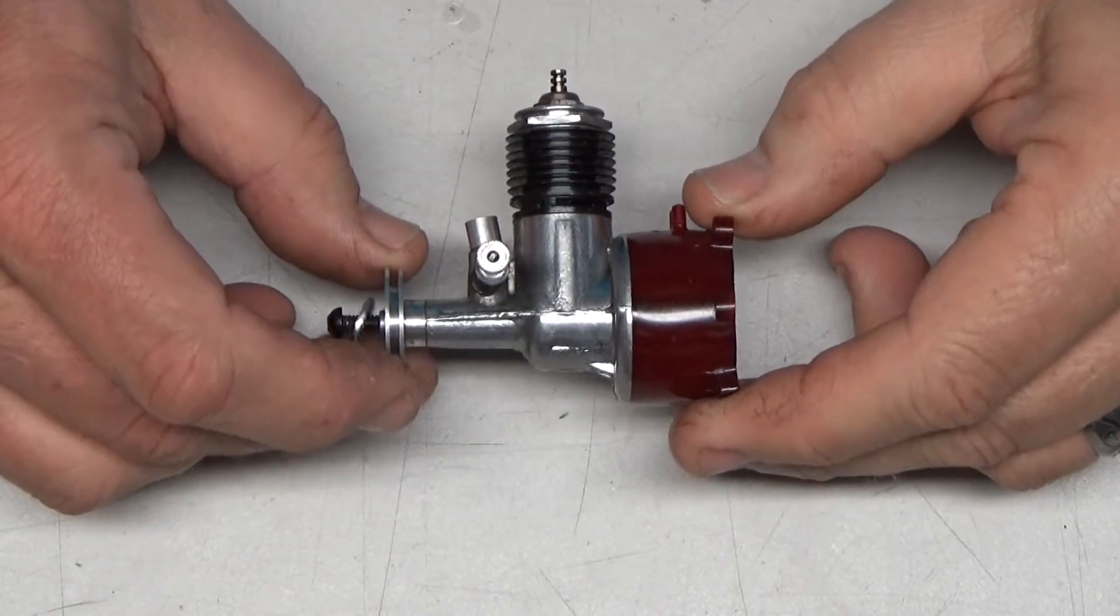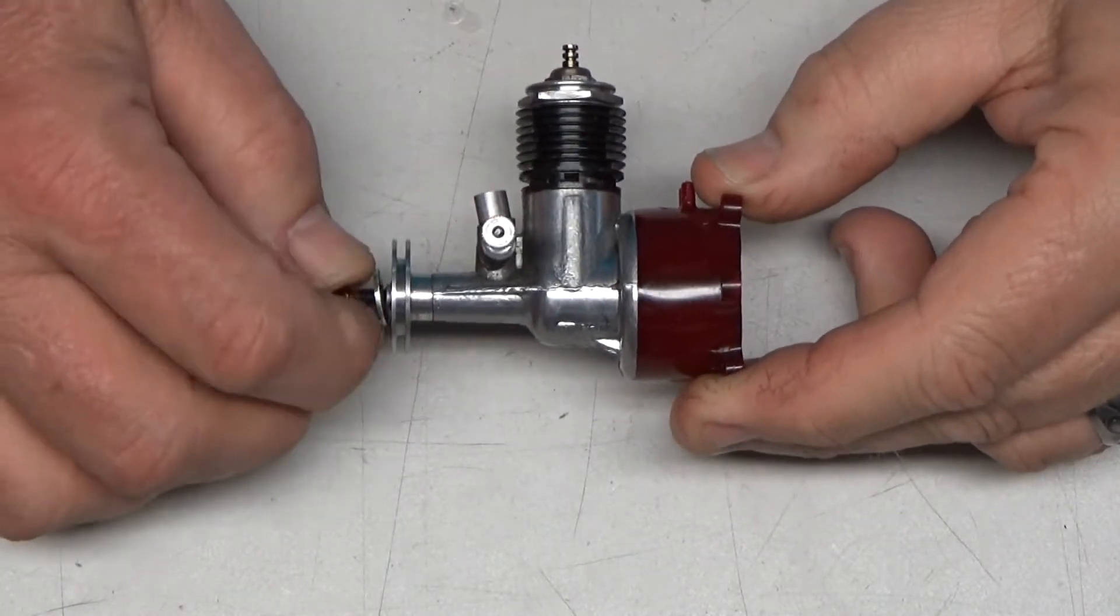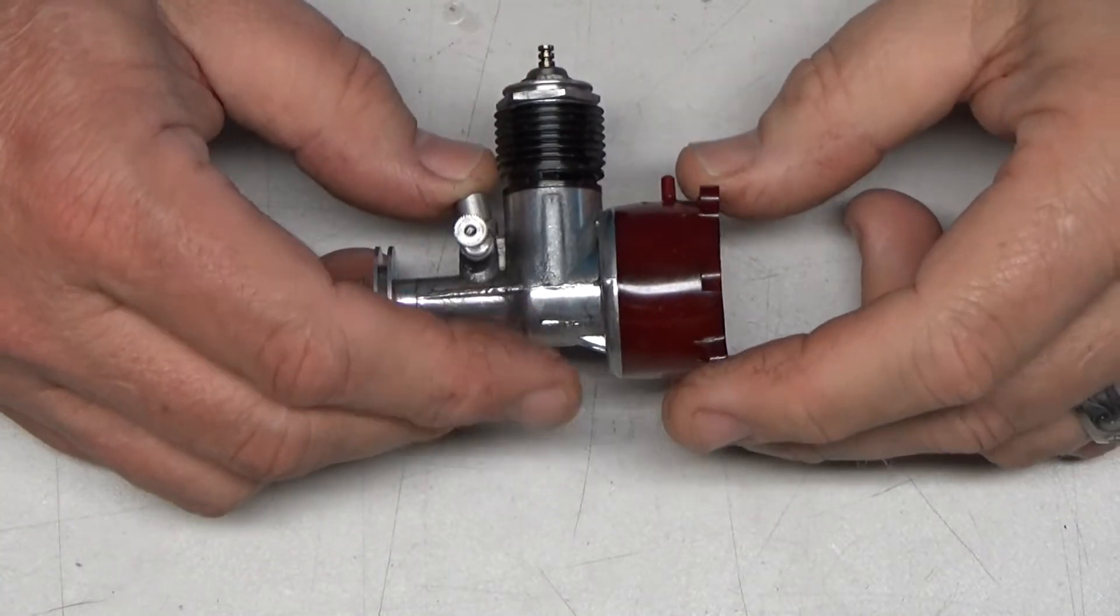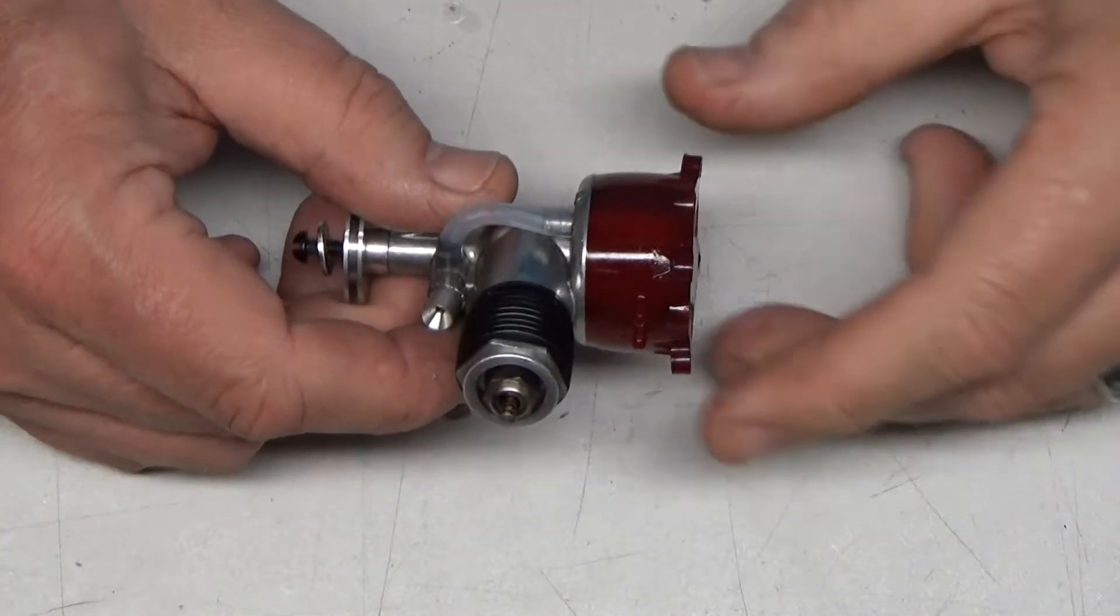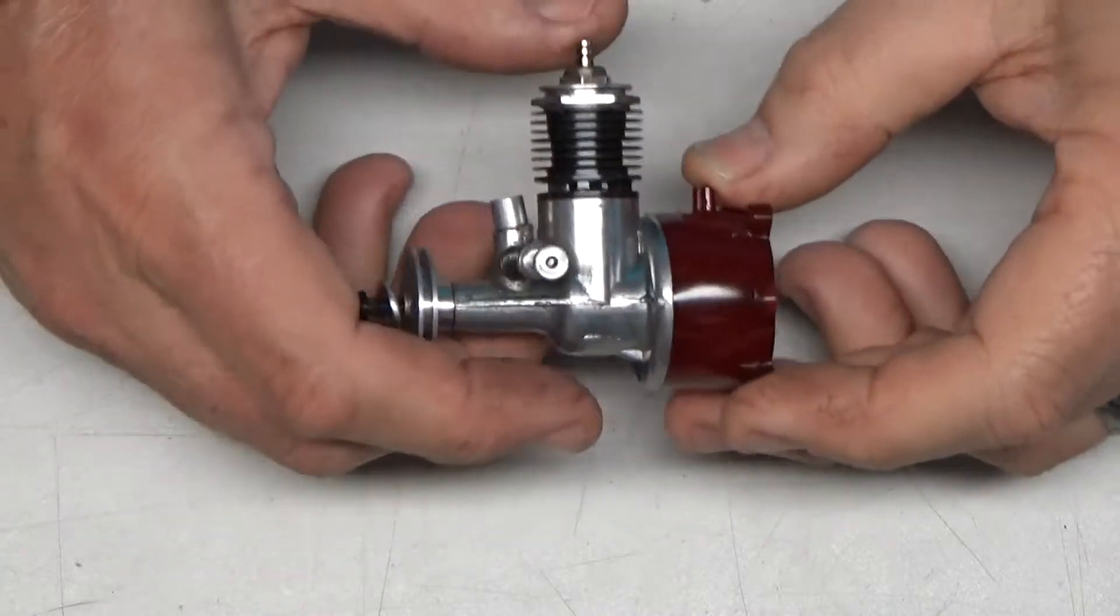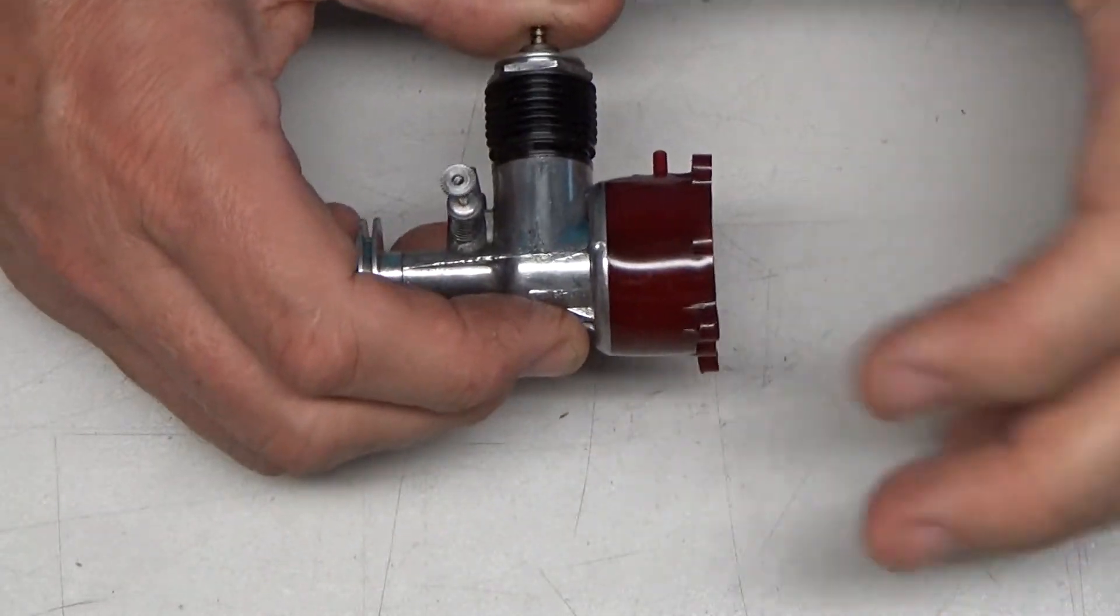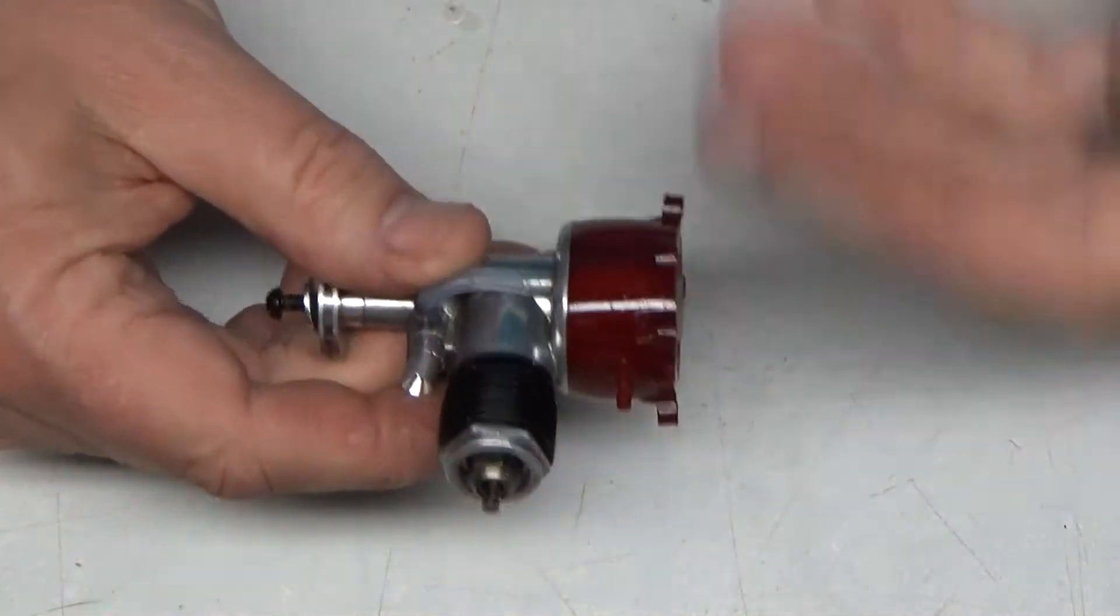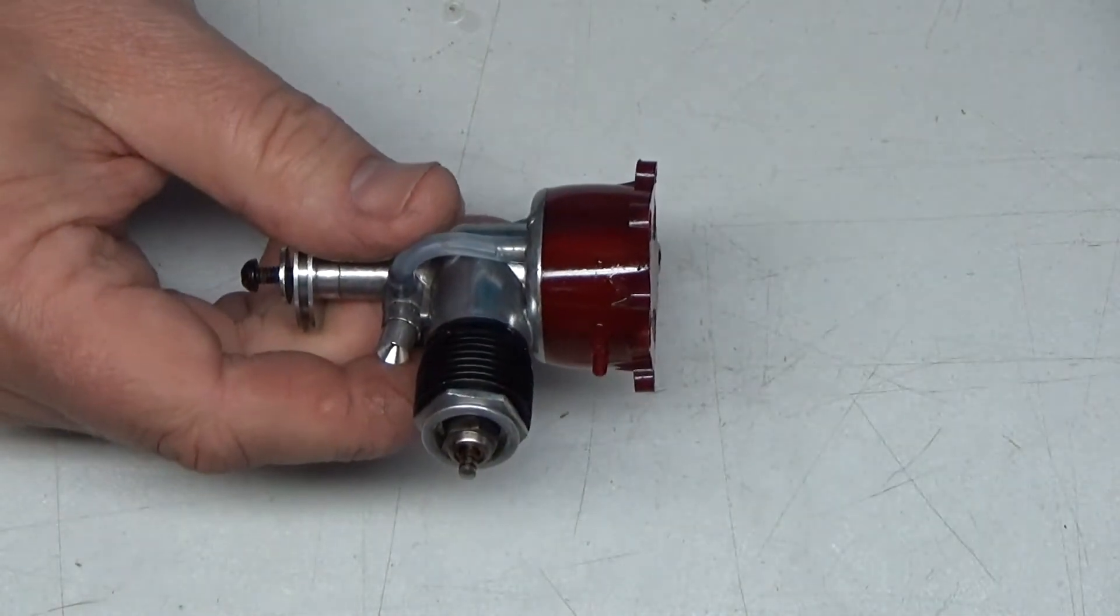I've got my OK Cub 049 engine here, and those of you that saw me run this thing for the first time on video saw a short run. It turns out that this tank is rather translucent, and if you hold it up to the light, you can kind of see through it and see the fuel level.